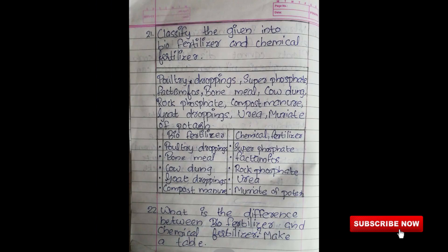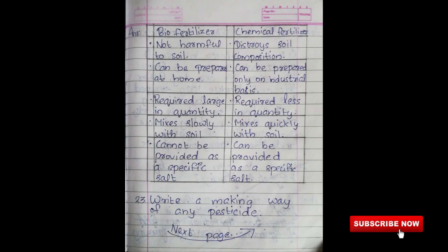Twenty-first question: Classify the following into biofertilizer and chemical fertilizer. Biofertilizer: poultry droppings, bone meal, gobar, rock phosphate, compost, manure, goat droppings. Chemical fertilizer: super phosphate, urea, muriate of potassium. Biofertilizer is non-harmful to soil. Chemical fertilizer destroys soil composition.